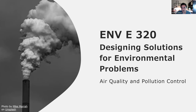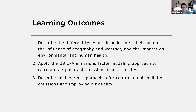This module is about air quality and pollution control. Our learning outcomes are to describe the different types of air pollutants, their sources, the influence of geography and weather, and the impacts on environmental and human health, to apply the US EPA emission factor modeling approach to calculate air pollutant emissions from a facility, and to describe engineering approaches for controlling air pollution emissions and improving air quality.